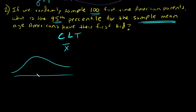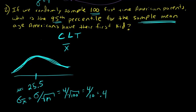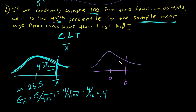If x-bar, the sample mean, is normally distributed, the center is still the same — mu is still 25.5. But the spread of this distribution is referred to as sigma x-bar, and it equals sigma divided by the square root of n. So it will have less spread depending on how big your sample size is. That gives us 4 divided by the square root of 100, which is 4 divided by 10, or 0.4. We're still finding the 95th percentile using the standard normal distribution, so the z value is still 1.645.